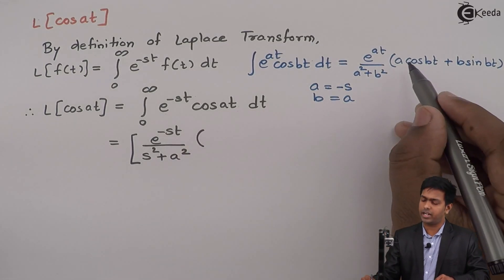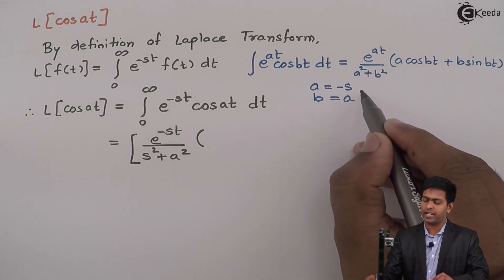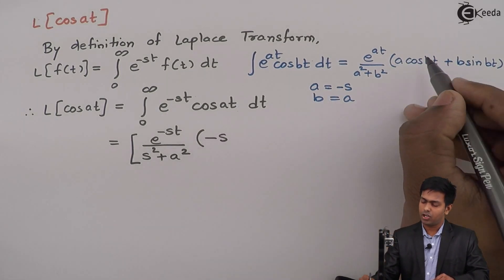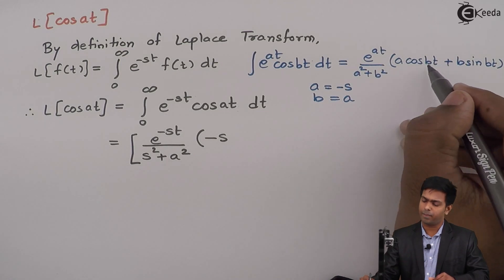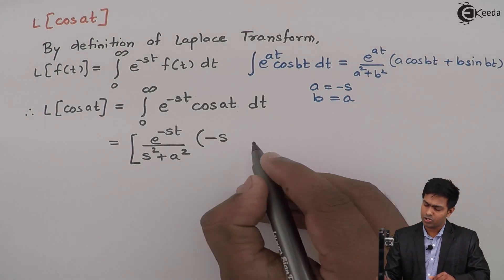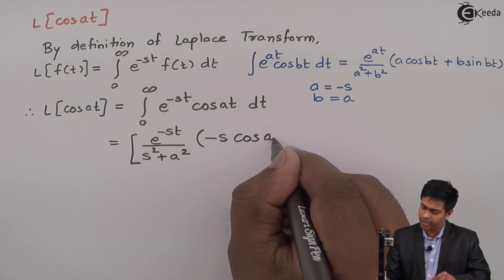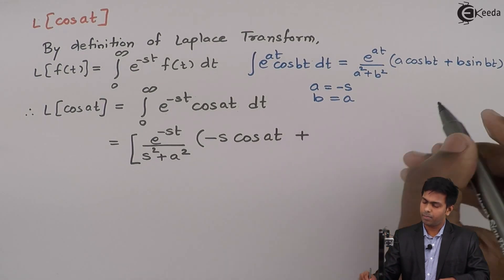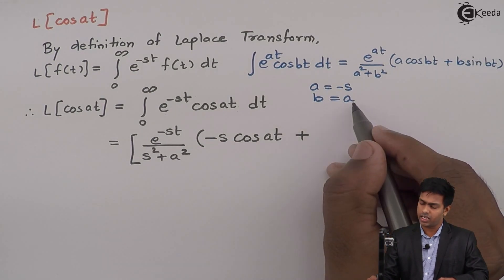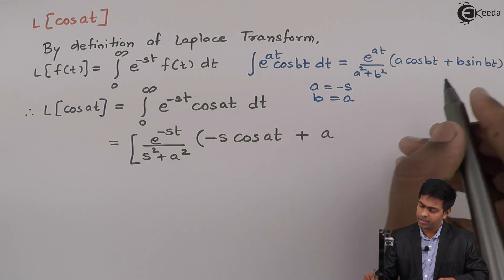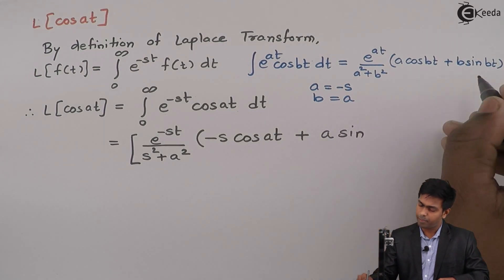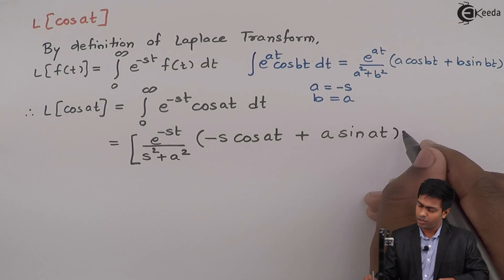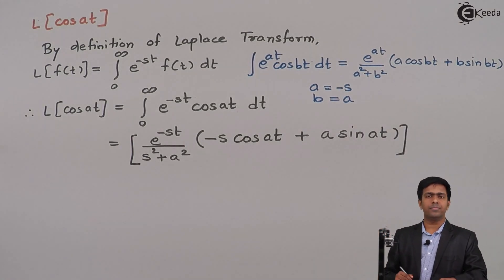By doing that, we get e raised to minus st divided by (s² + a²) — since minus s squared gives positive s² — in brackets: minus s times cos(AT) plus a times sin(AT). So here we have obtained the integrated term.